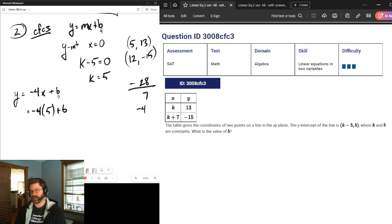Remember, they say in the question that this is the y-intercept. So negative 4 times 5 plus b equals the y-coordinate positive 13. So negative 20 plus b equals 13. Add the 20. We get 33 equals b.